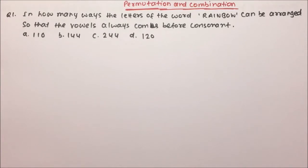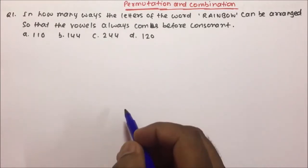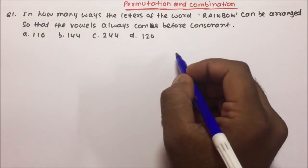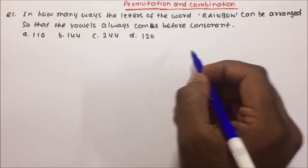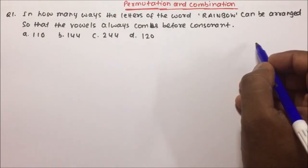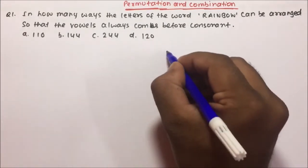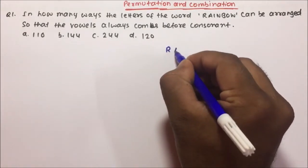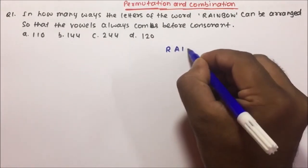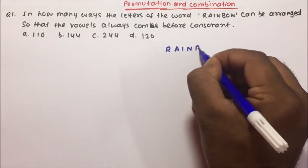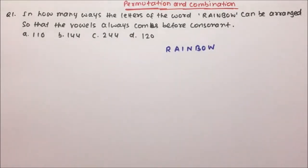So let's start with question number one: in how many ways can the letters of the word RAINBOW be arranged so that the vowels always come before the consonants? So friends, first write down the word. The word is RAINBOW.